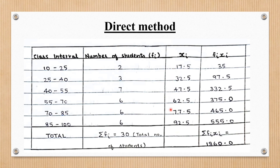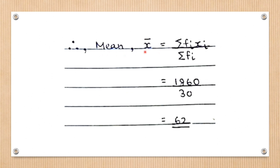The next column is fi times xi, where we directly multiply frequency by xi. For the first class interval, multiplying 2 by 17.5 gives 35. We continue the same step for the remaining class intervals, then find the sum of fi·xi. Finally, x-bar equals the sum of fi·xi divided by the sum of frequency. Here, 1860 divided by 30 equals 62. So the mean by the direct method is 62.